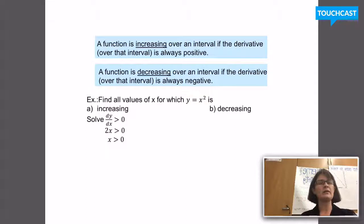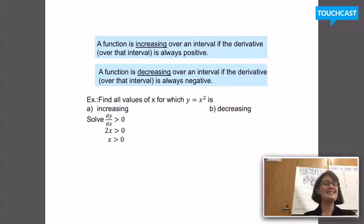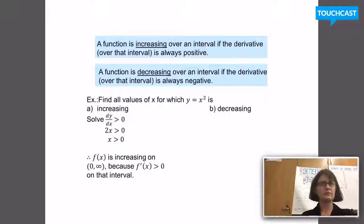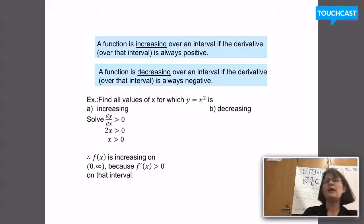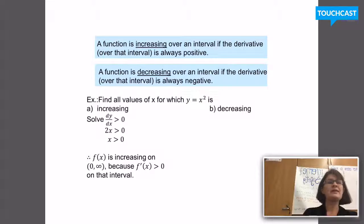I write my inequality dy/dx > 0. The derivative is 2x, so 2x > 0. Solving that inequality by isolating x, I get x > 0. My conclusion — and this is what you have to watch out for because you'll be asked to justify your answer on the AP test — f(x) is increasing on the interval (0, ∞) because f'(x) is positive, that is, f'(x) > 0 on that interval.